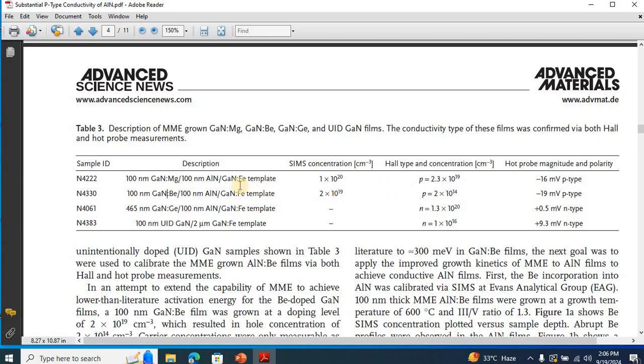I also performed hot probe measurements on some other samples. Like for example, this sample is germanium-doped gallium nitride. Germanium acts as an N-type dopant for gallium nitride. And from hot probe measurements, I found out a positive potential of plus 0.5 millivolts indicating it's an N-type semiconductor.